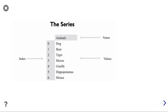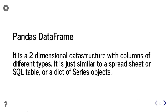Pandas has provided a two-dimensional data structure called DataFrame. It has a three-dimensional data structure also, but in our syllabus we will cover only the two-dimensional data structure. If I add multiple series, it will make a table-like structure, or you can say it will make a spreadsheet or Excel-like structure. That two-dimensional data structure is called a pandas DataFrame — it is a two-dimensional data structure with columns of different types, similar to a spreadsheet, SQL table, or a dictionary of Series objects.